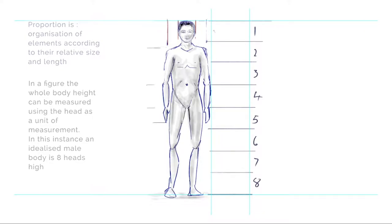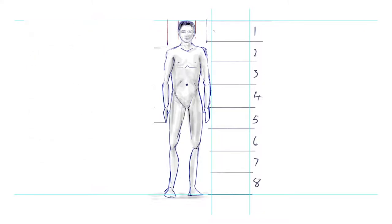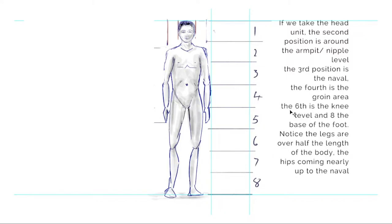Again, this is a standing figure which makes it quite realistic. If we take the head as a unit, the second position is around the armpit and the nipple. The third position would be around the navel and the fourth is to the groin area.